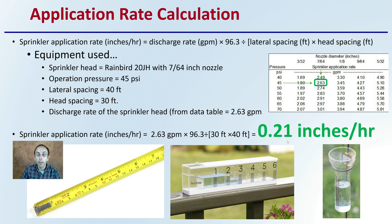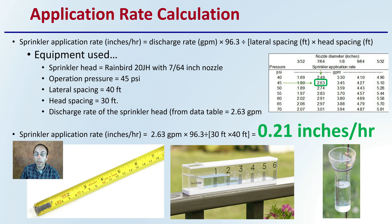We can use that application rate to determine the duration we want to keep that sprinkler running, based on how much water we want to give those plants considering the soil type, the age of the plants, and the environmental conditions.